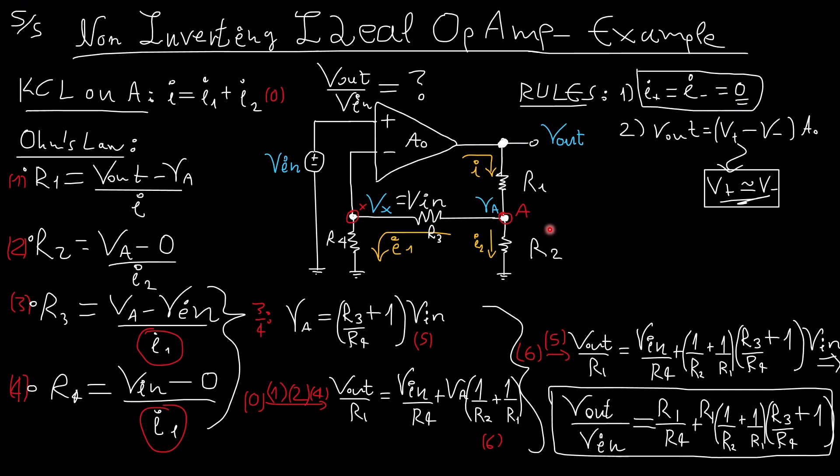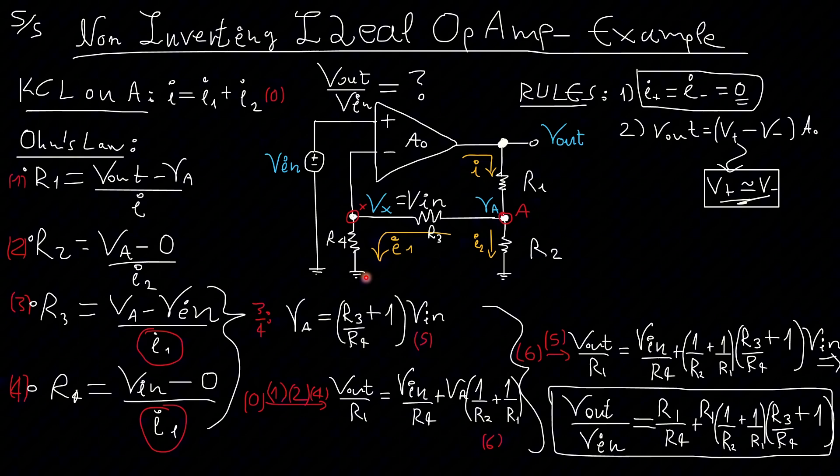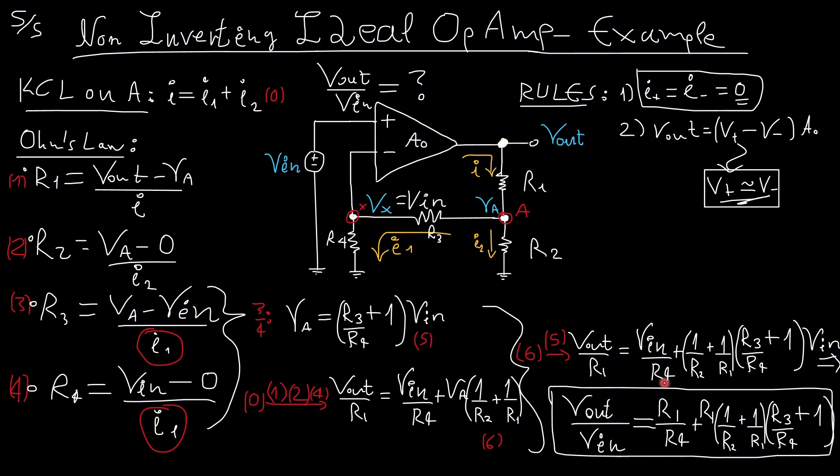Similarly, if we said that R2 is very large, this would be an open circuit here. We could have R1 and R3 in series. And we have an R4 connected between here and the ground. You can do this as an exercise and you can figure it out.